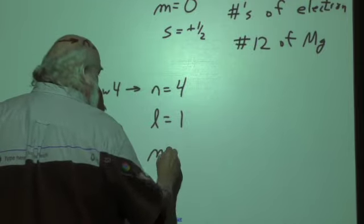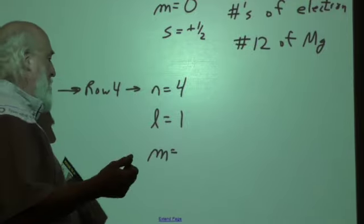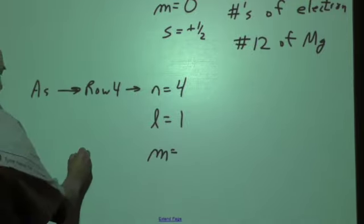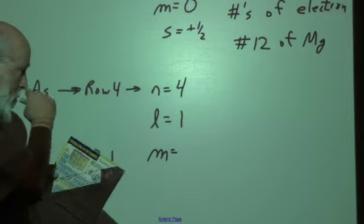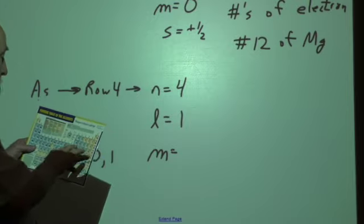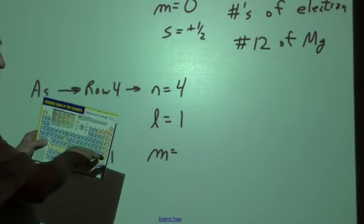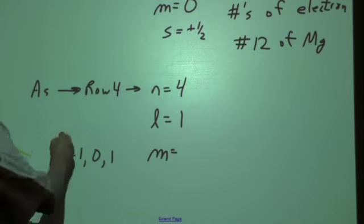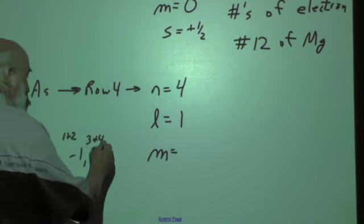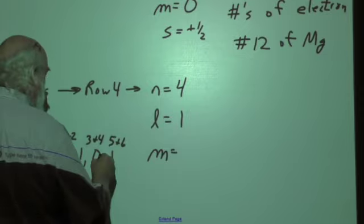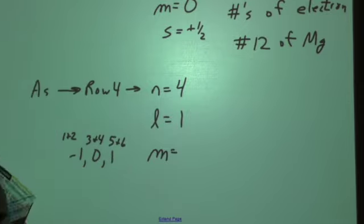Now when that happens, we have three possible numbers for M: negative one, zero, and one. So this is going to be one of those three numbers. Well, this is the third electron of that, so one and two go here, three and four go here, five and six go here. First and second electron, third and fourth electron, fifth and sixth electron.